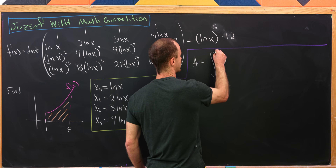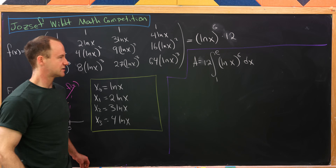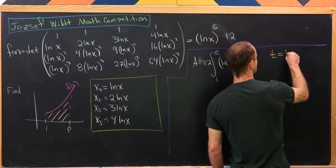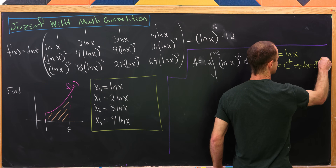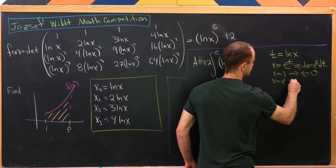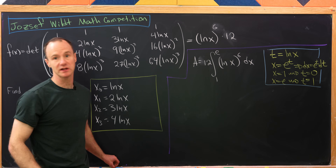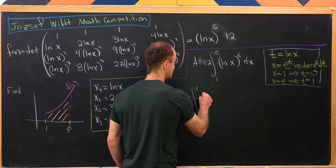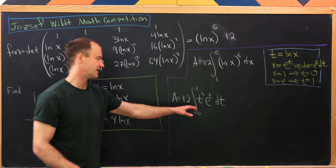The area is the integral from 1 to e of f(x) dx = 12 times the integral from 1 to e of (ln x)^6 dx. We use the substitution t = ln x, so x = e^t and dx = e^t dt. When x = 1, t = 0; when x = e, t = 1. The integral becomes 12 times the integral from 0 to 1 of t^6 e^t dt. We finish this with tabular integration.